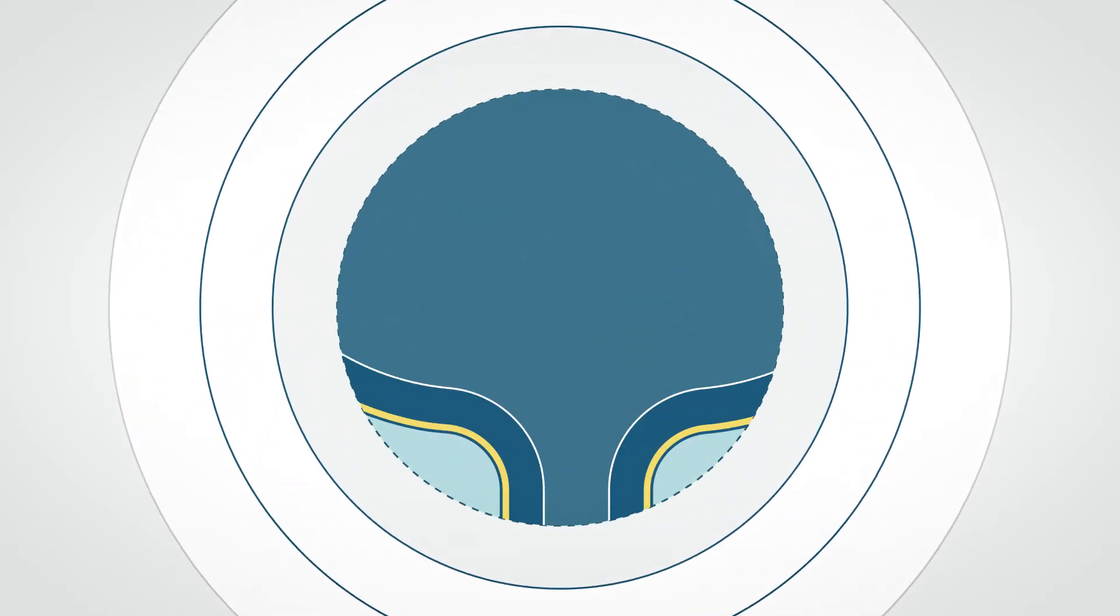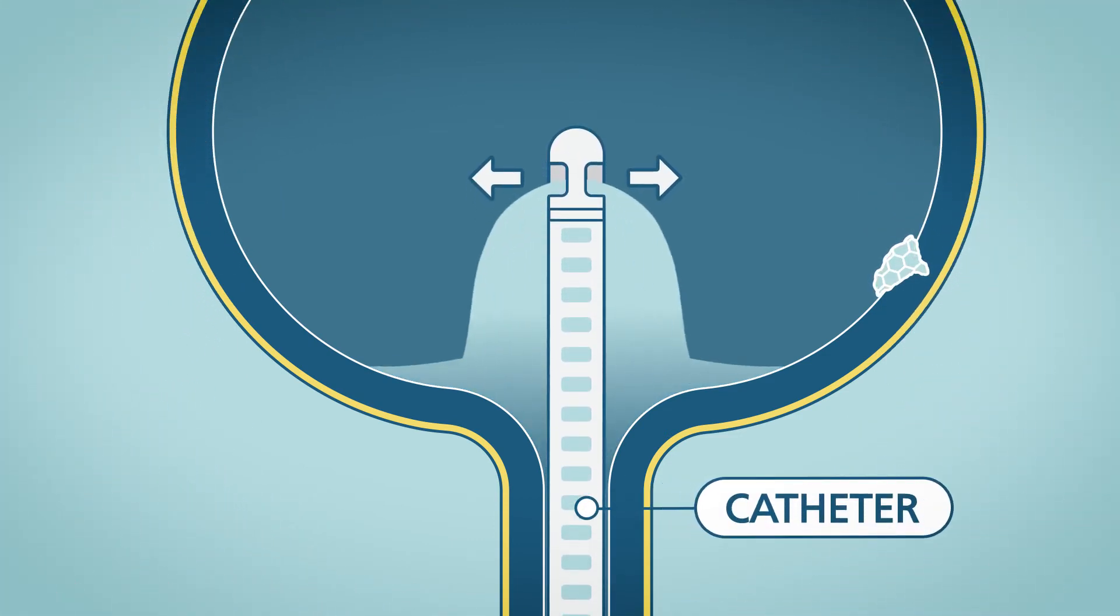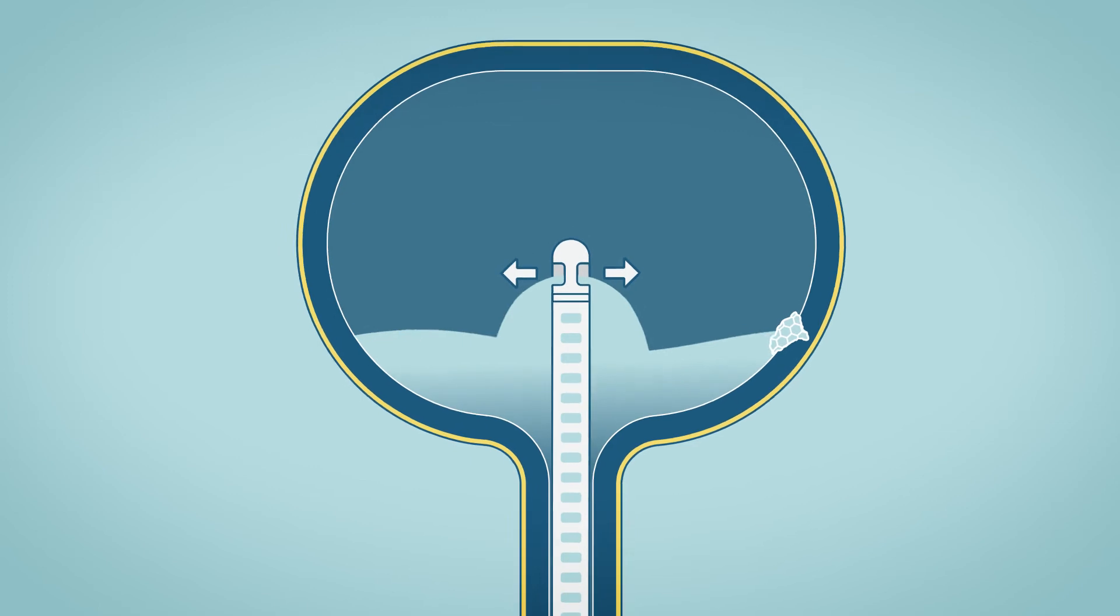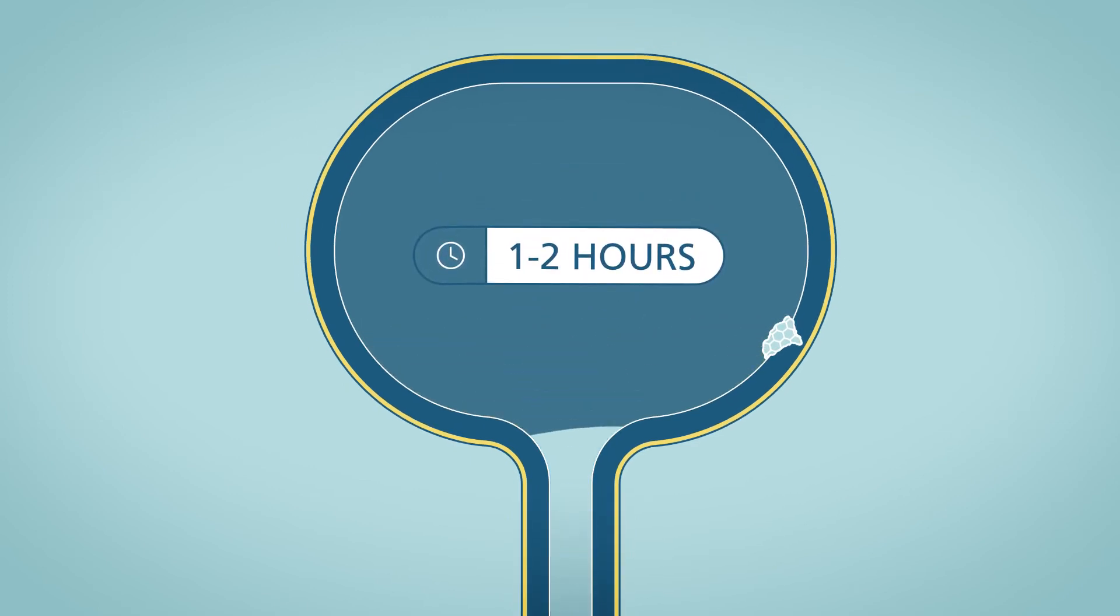During the procedure, the drug is put into the bladder through a catheter. A catheter is a small tube that goes into your bladder through your urethra. You hold the drug in your bladder for one to two hours and then pass it out. You often can go home that same day.